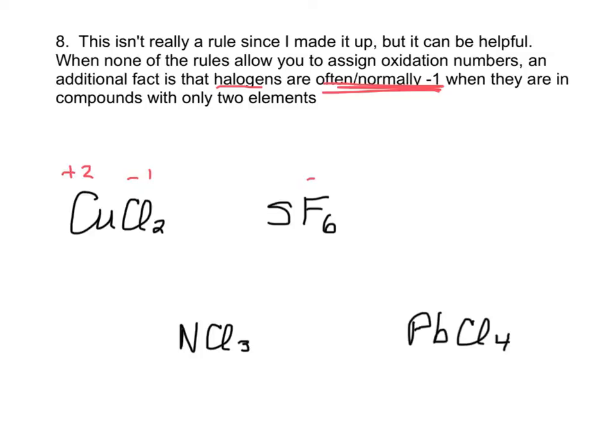Here, SF6, if we assume fluorine is -1, sulfur is +6. If we assume chlorine is -1, nitrogen is +3. If we assume chloride is -1, lead is +4.